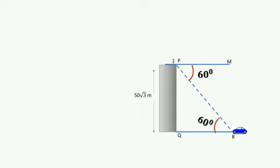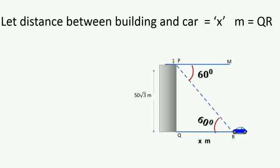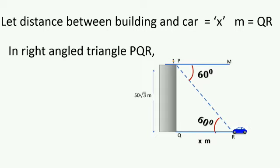In right angled triangle PQR, we have to find the adjacent side, so we have to find x. x is the distance between the car and the building. In the right angle triangle PQR, we are given angle, opposite side, and adjacent side.